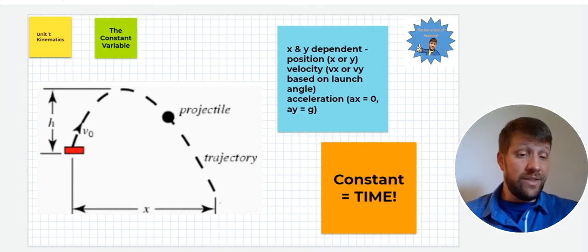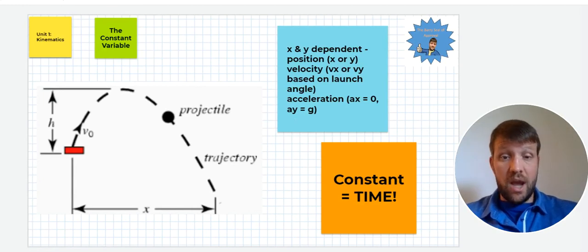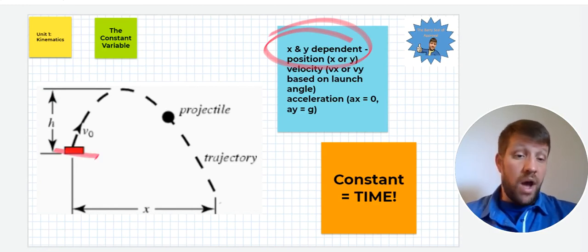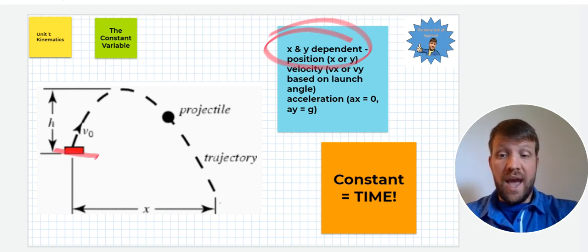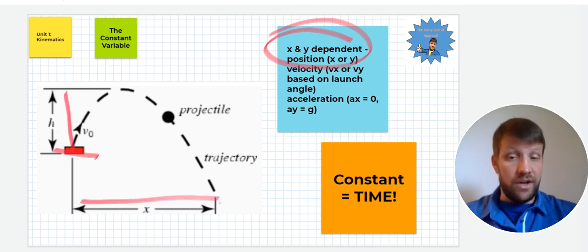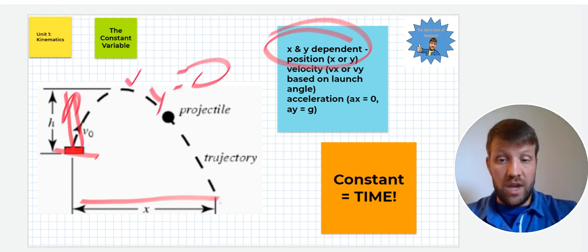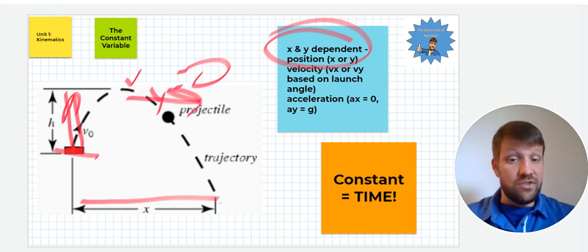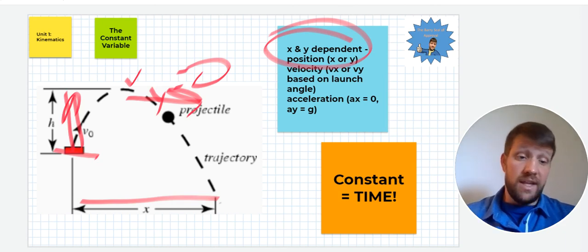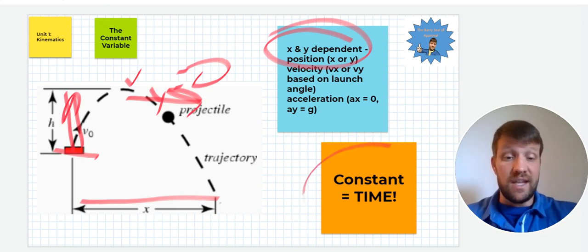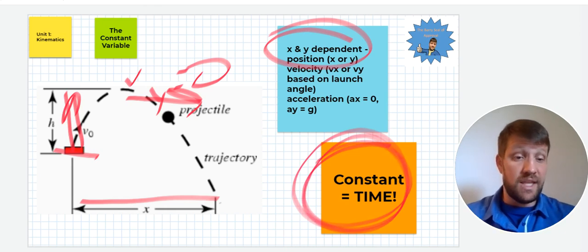If we look at the constant variable between those two directions, there is one. Our x and y dependent items here, the position, if we look at this object being launched right there, the x and y are going to be independent of each other. As this moves right, how high it is, it's not going to be exactly the same as how far it's traveled, so the position is going to be different. That velocity is going to change throughout also because it's going to have some v y here, but v y here is going to be zero, but it's still going to be moving in this direction. Our velocities are going to be different from each other as well. The acceleration is not going to happen at all in the x direction but is going to be in the y direction equal to the acceleration due to gravity. The one thing that will be constant throughout this is the amount of time it spends in the air. Whether we look at how it's moving up and down or left to right, it's going to spend the same amount of time in the air, and that is the key.